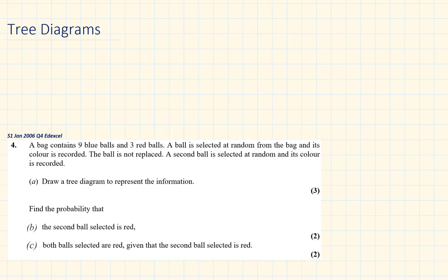In this video we will cover tree diagrams. When drawing tree diagrams, at the end of the branches we write our events. Let's call this first set of events A and A not happening. The branches include the labels of the probabilities — probability of A and probability of A not happening. All the branches add up to 1, so probability of A plus probability of A not happening equals 1.